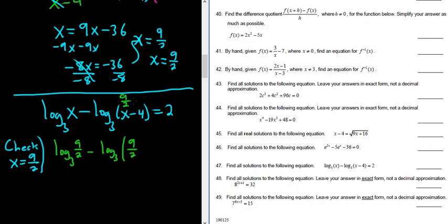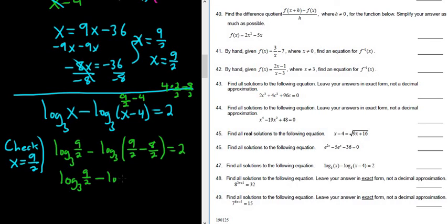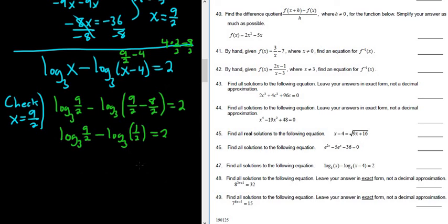Here's something cool. We're subtracting 4, so write 4 in a convenient way — multiply by 2 over 2 to get 8 over 2, so it's minus 8 over 2. Then: log base 3 of 9 over 2 minus log base 3 of 9 over 2 minus 8 over 2. Since 9 over 2 minus 8 over 2 equals 1 over 2, we get log base 3 of 1 over 2, and that should equal 2. Now apply the quotient rule: log base 3 of 9 over 2 divided by 1 over 2, equal to 2.